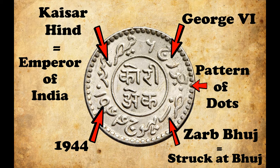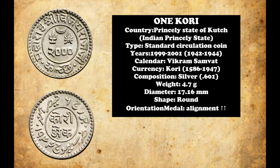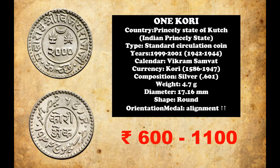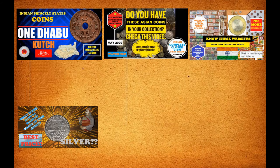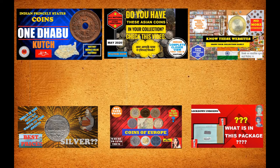A pattern of dots can be observed on the outer edge of this side also. As of the market rate of June 2020, this coin is valued between Indian Rupees 600 to 1,100 in normal conditions. If you find this video helpful, please like the video, subscribe to the YouTube channel, and click the bell icon so you won't miss any videos on coins and currencies. Thank you for watching. Have a nice day.